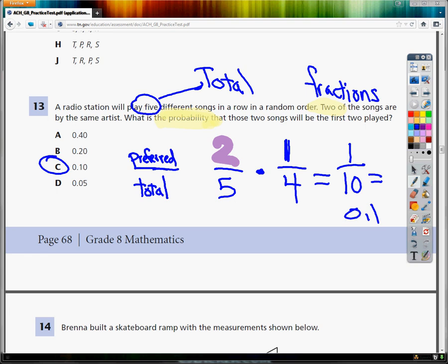So when you have probability, set up one fraction for each event, try to determine whether or not the total changes depending on what the problem says, and then just multiply them together, and that's it.